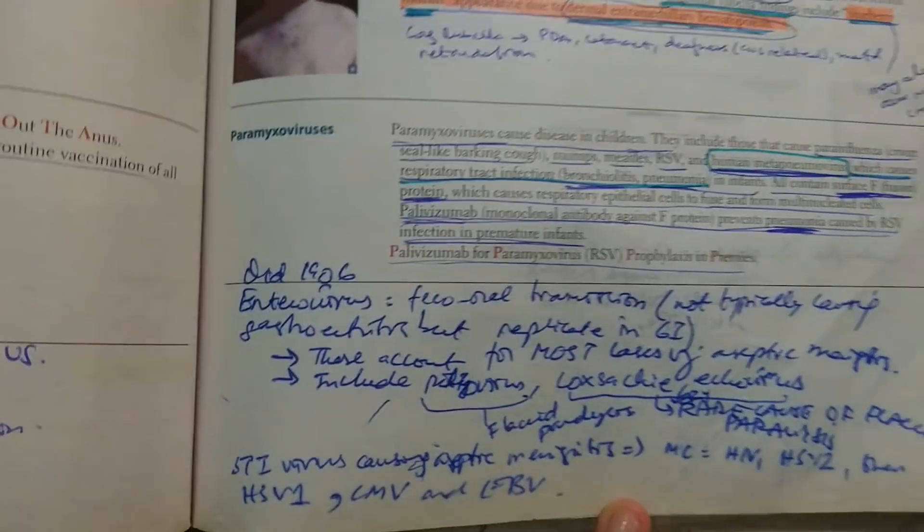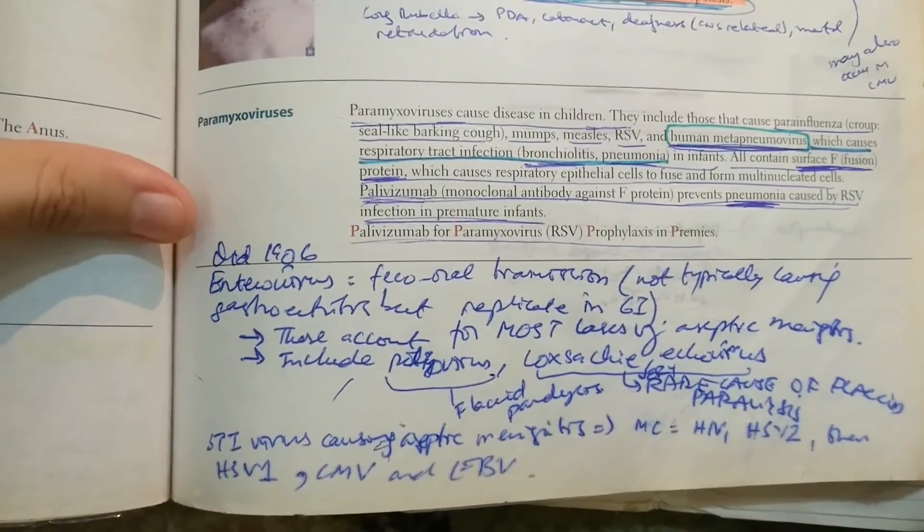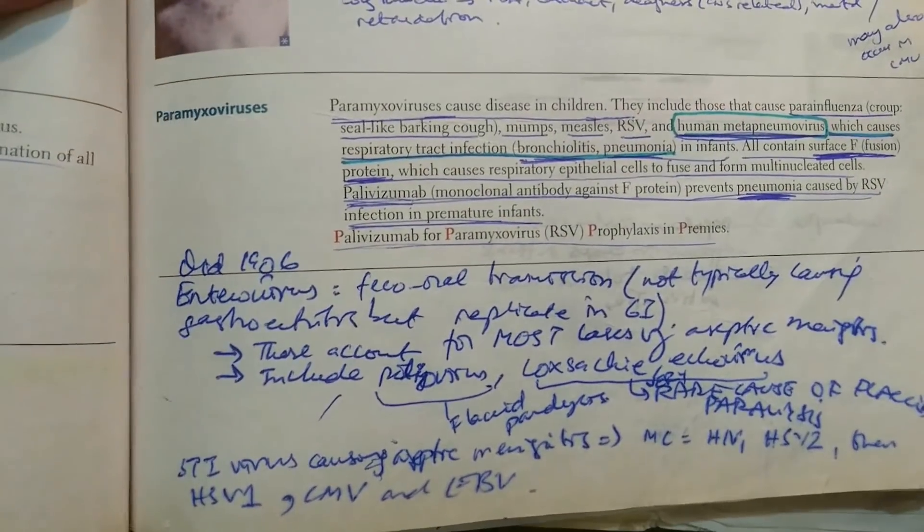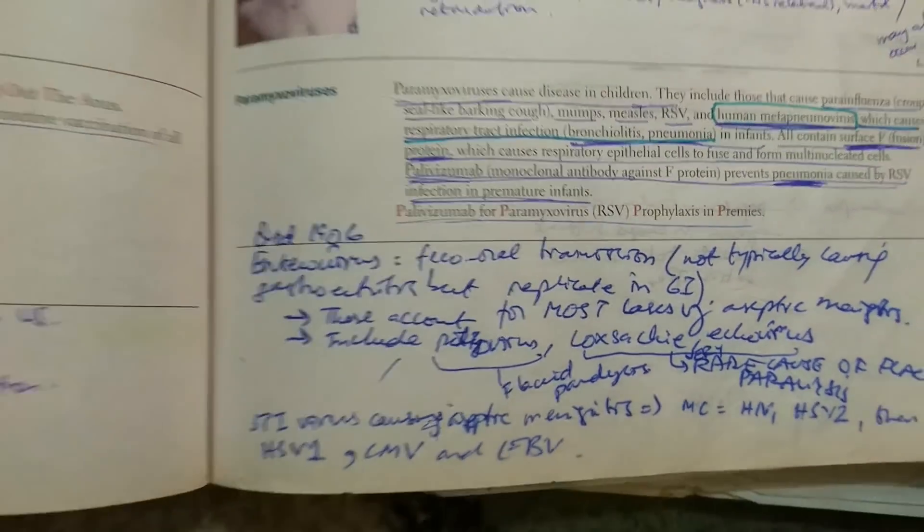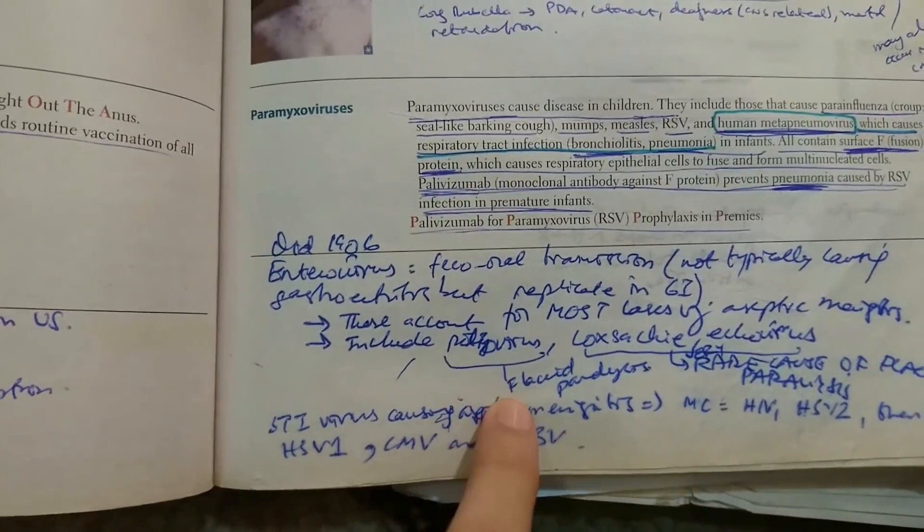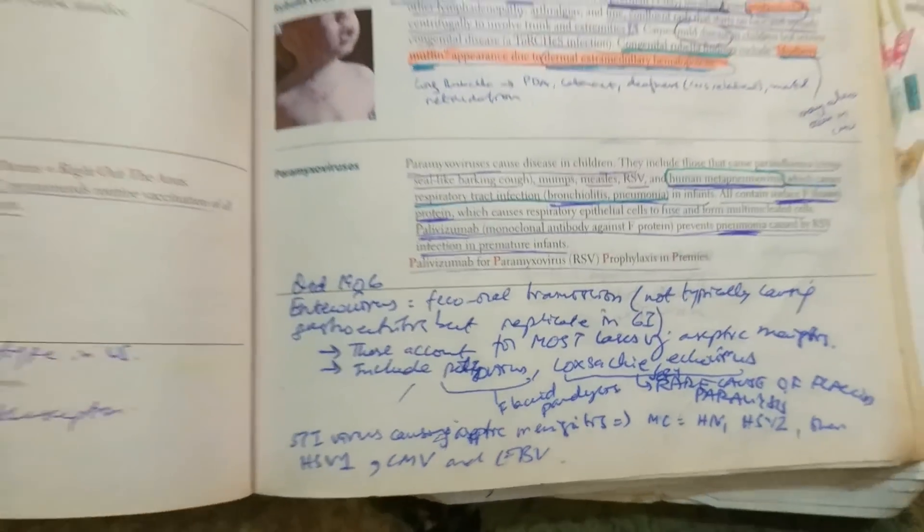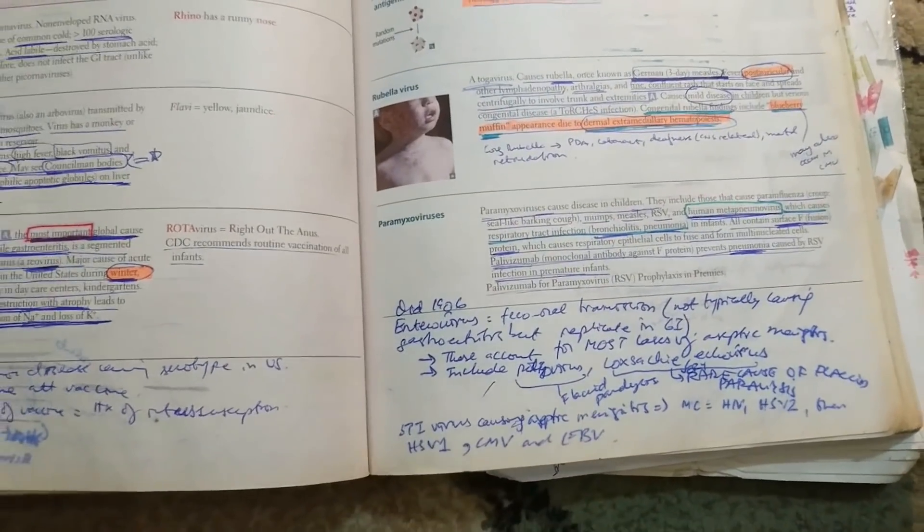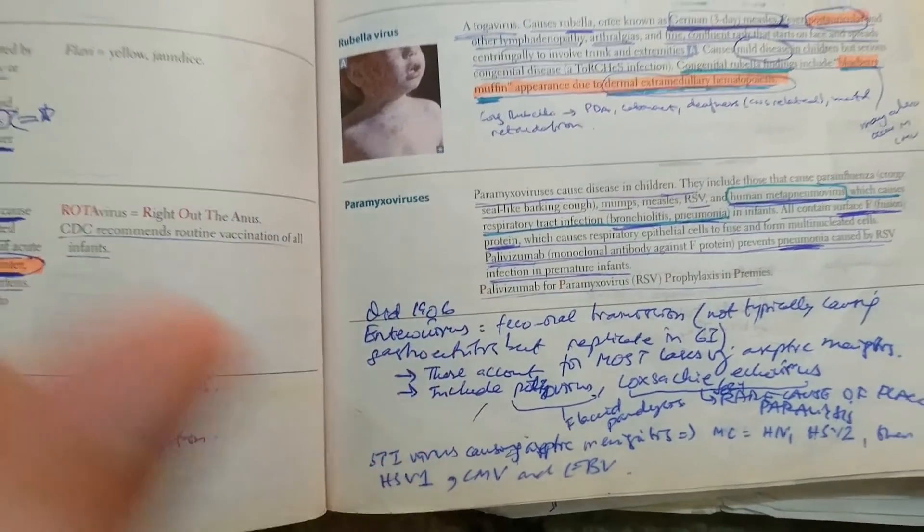Okay so another thing that I did as you can see over here is I annotated things from UWorld, and when I did annotate anything from UWorld I made sure to write down the question ID over there. In case, for example, I am rereading this information and I don't understand something that I wrote, like maybe I wrote something that's not legible or maybe I wrote something that contains insufficient information, I can always go back using my question ID.